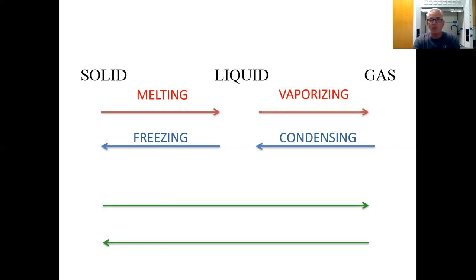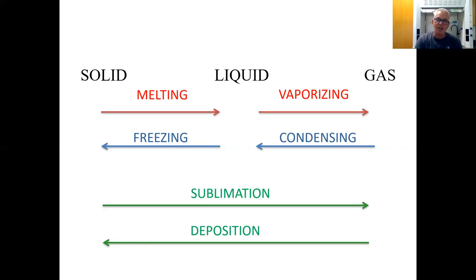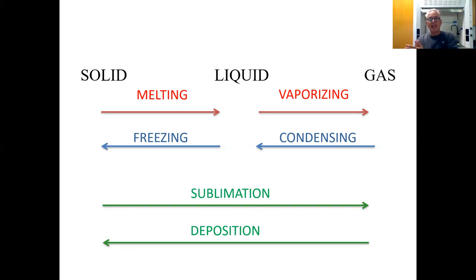The bottom two phase changes don't happen very often under normal conditions, though most substances can do this — it has more to do with pressure. Going from a solid directly to the gas phase without becoming a liquid first is called sublimating, or sublimation. And the reverse — when gas goes directly to the solid without turning into a liquid first — is called deposition. The gas deposits itself as a solid. You have to memorize all six of these.